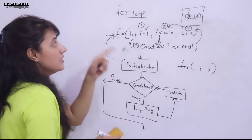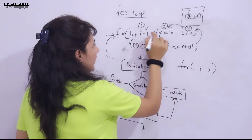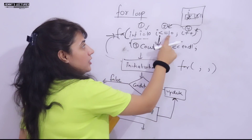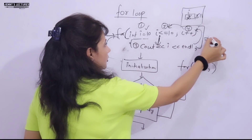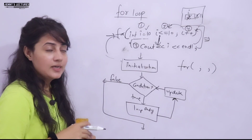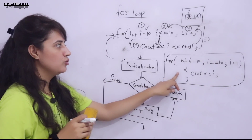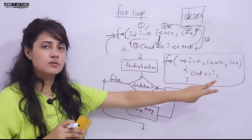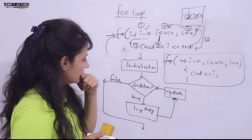Second assignment: I write for(int i = 10; i <= 10; i++), and inside we simply print i. What output will you get? Write your answer in the comments. Think about it and tell me what the output would be.